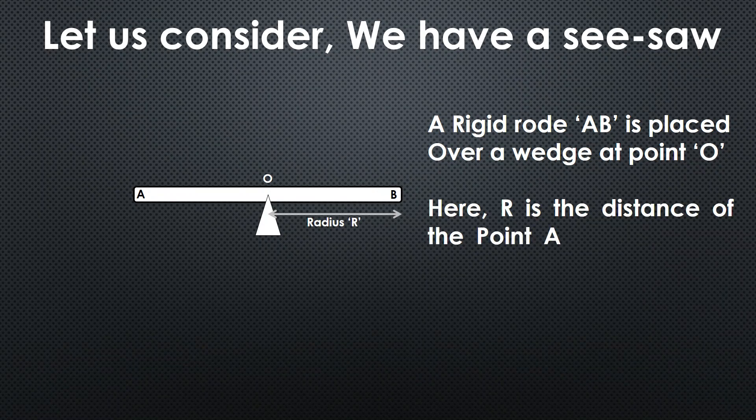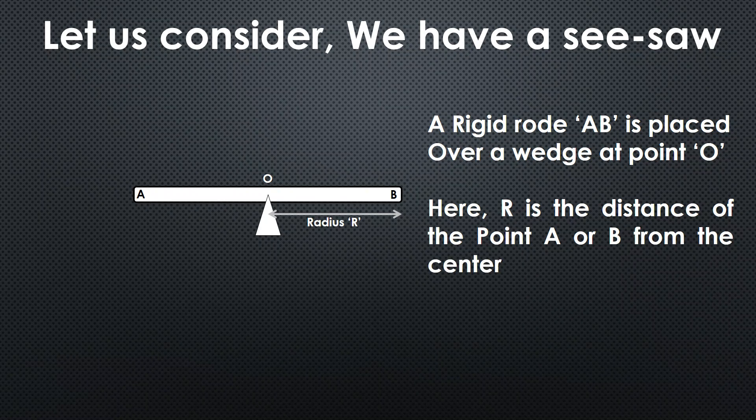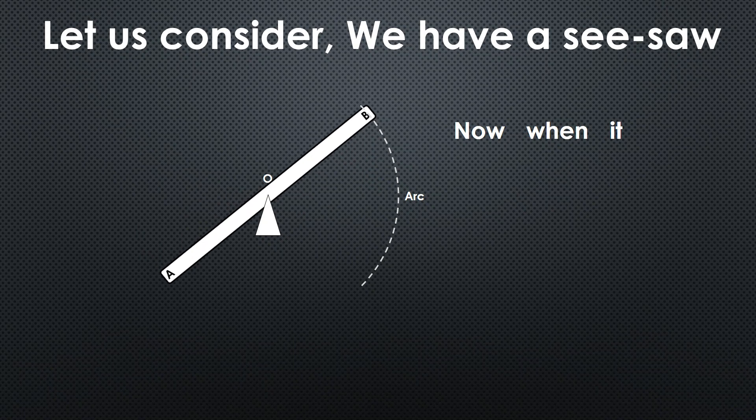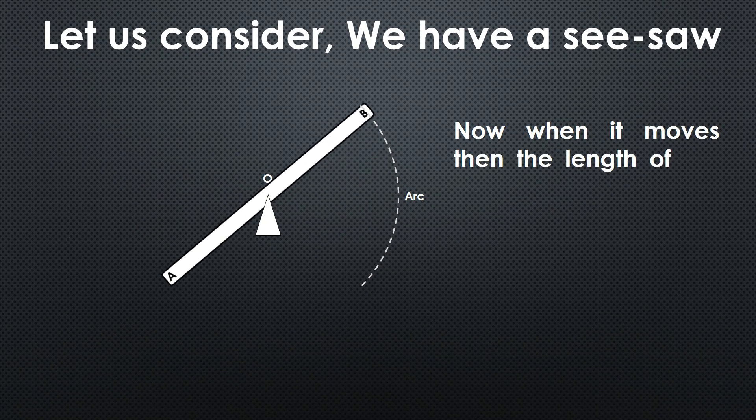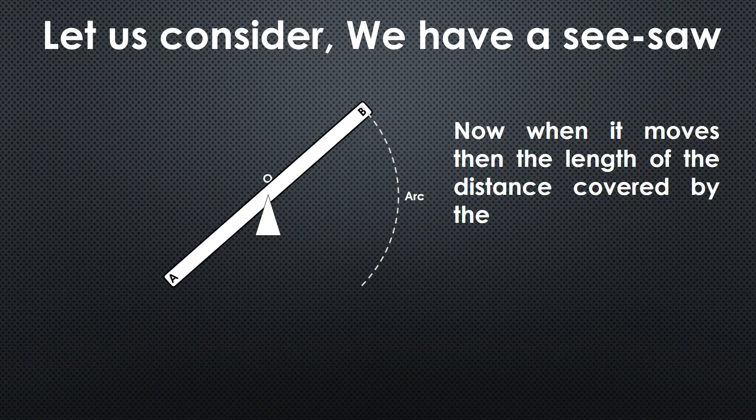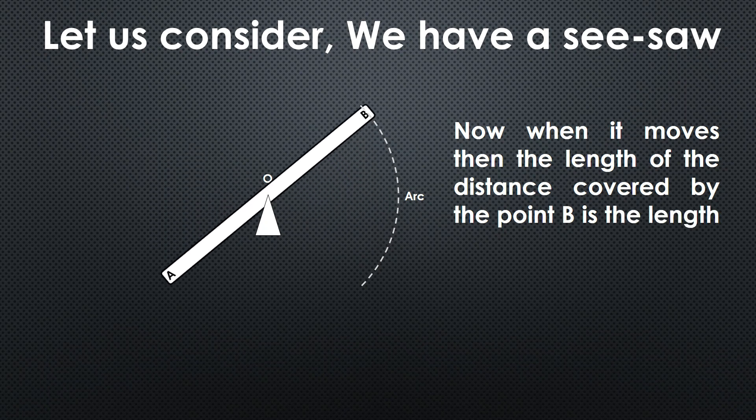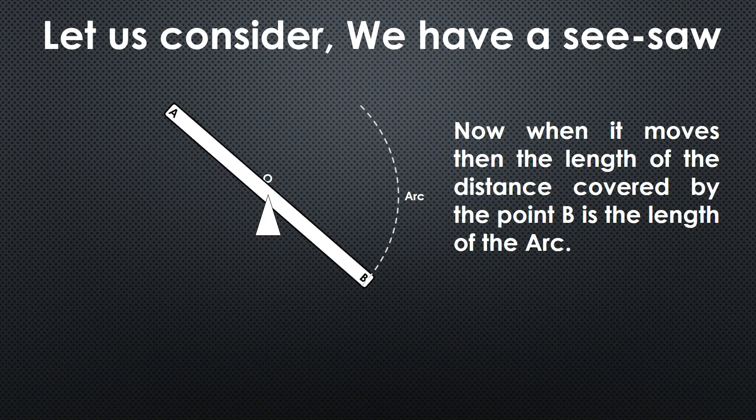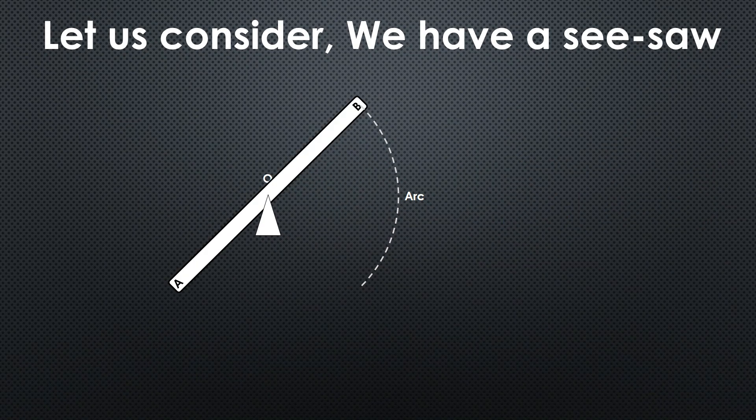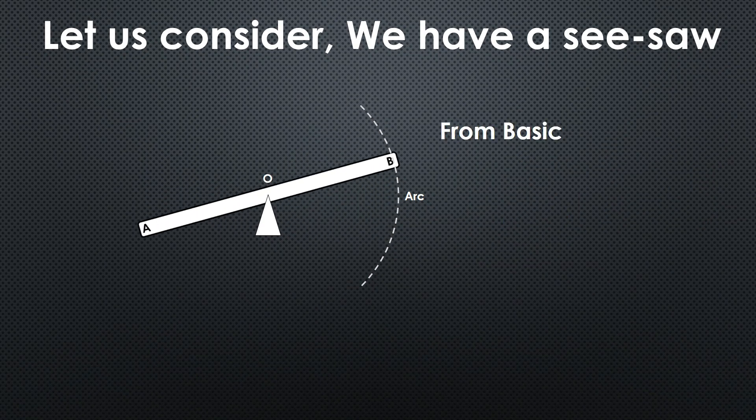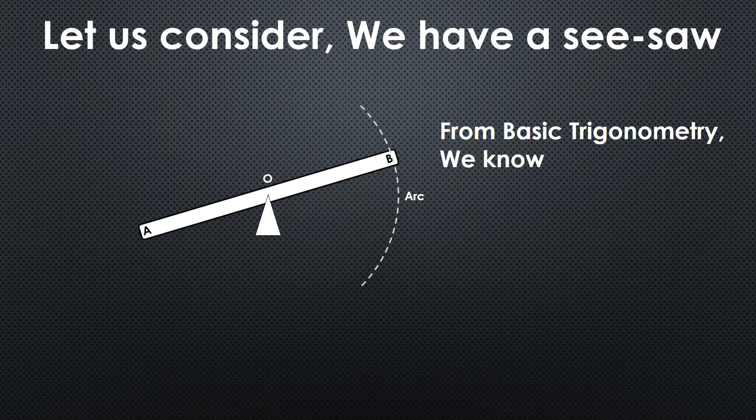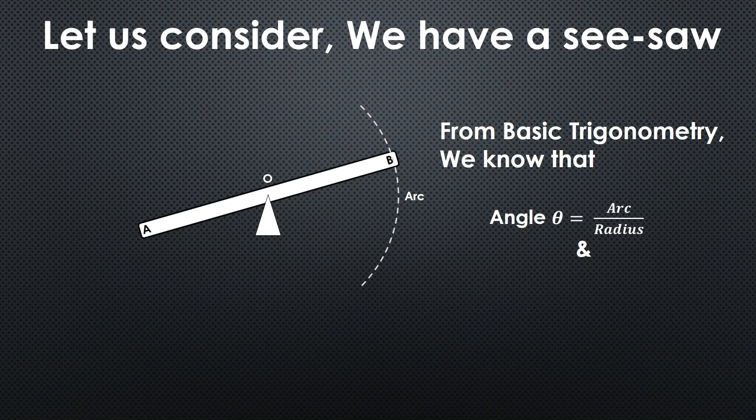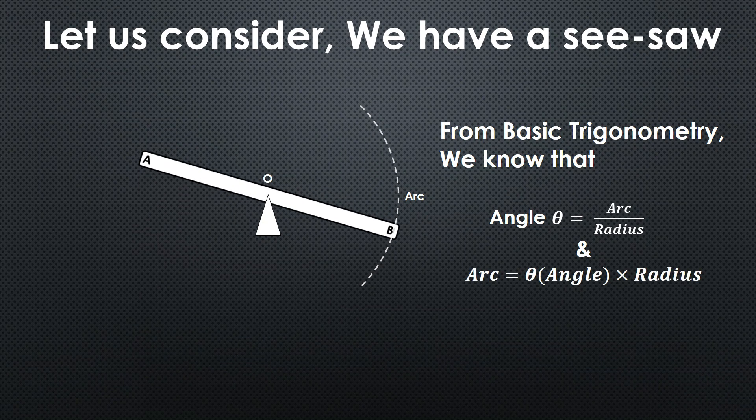Now when it moves, the length of the distance covered by any point A or B is the length of the arc, which is simple to understand. From basic trigonometry we know that angle theta is equal to arc upon radius.